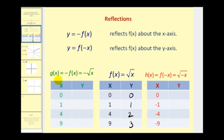Now let's compare this to g of x, which equals negative f of x, which equals negative square root of x. The square root of x would still be the same each time, but now we would take the opposite of that — so we would have 0, negative 1, negative 2, and negative 3. Notice that if you change the sign of the y-coordinates, this would reflect the graph across the x-axis.